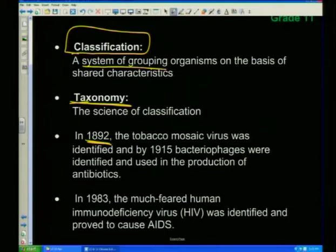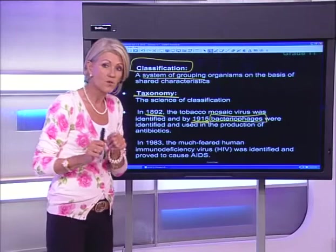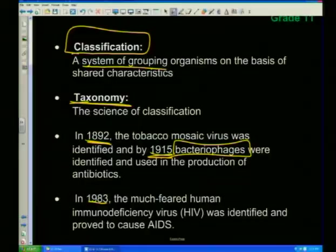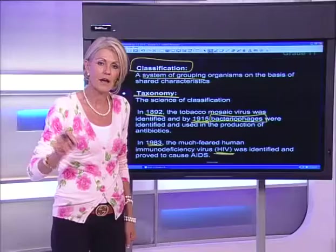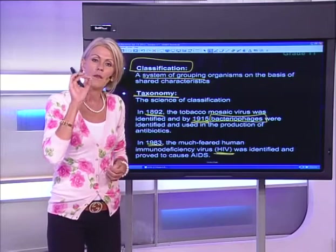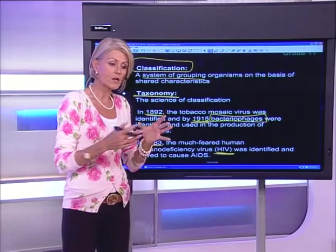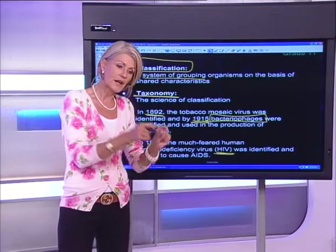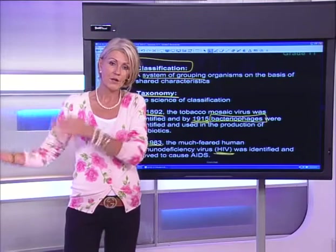In 1892, the tobacco mosaic virus was identified, and by 1915 bacteriophages — which are very important, especially in grade 12 for genetic engineering. Then in 1983, they identified the human immunodeficiency virus, commonly known as HIV. Scientists believe many people died from other causes when they actually had HIV, but they didn't know until 1983, and a lot of people got HIV because blood wasn't being tested.